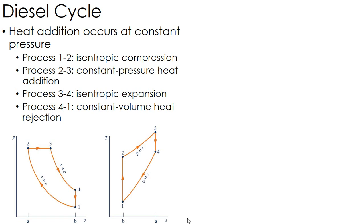Here we're going to look at the diesel cycle. The only difference between the diesel cycle and the Otto cycle is how heat addition occurs. Heat addition occurs at a constant pressure rather than a constant volume.